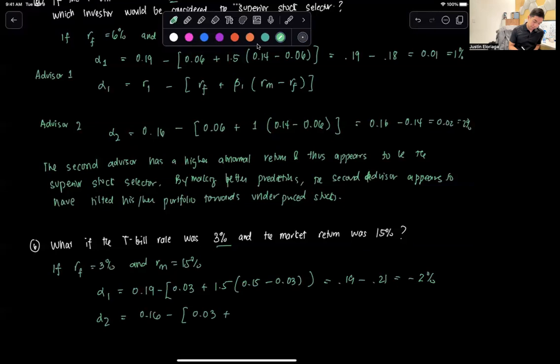Alpha 2 equals the beta of the second advisor is 1, times 0.15, minus 0.03. This is going to be equal to 0.16 minus 0.15, which is 1%.